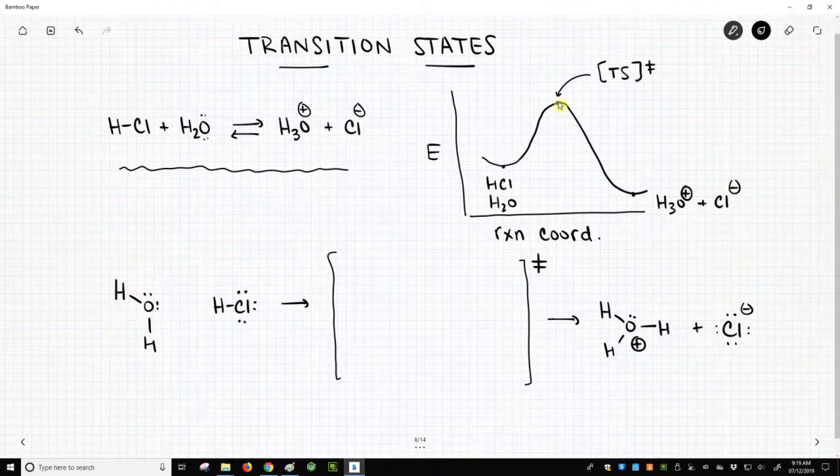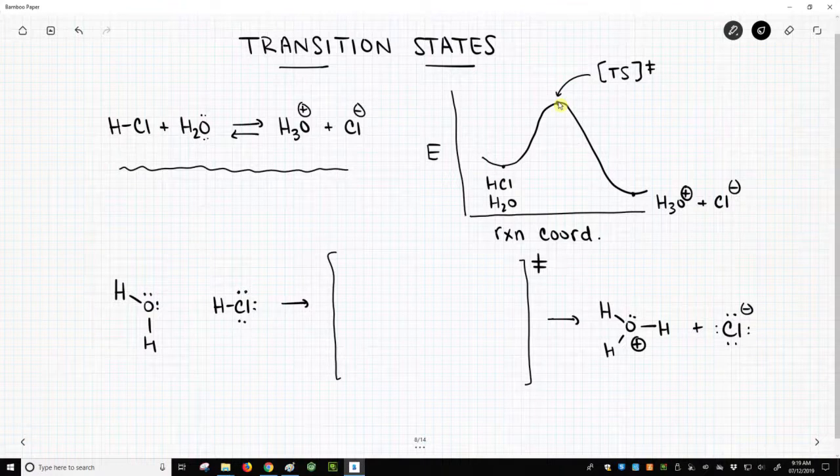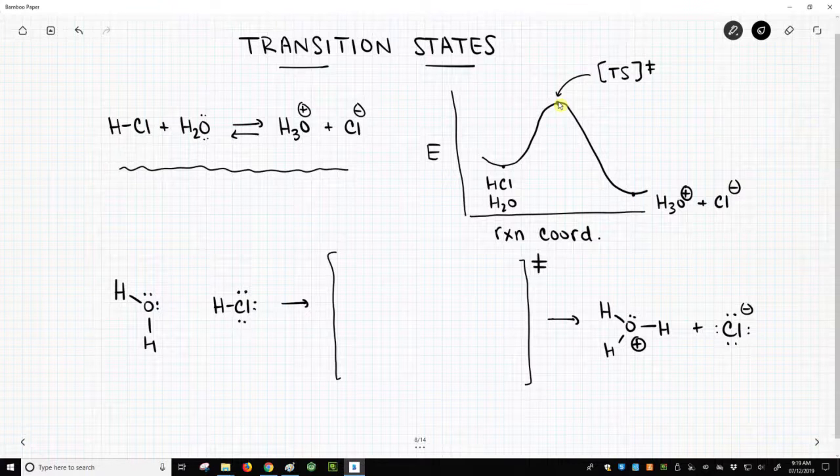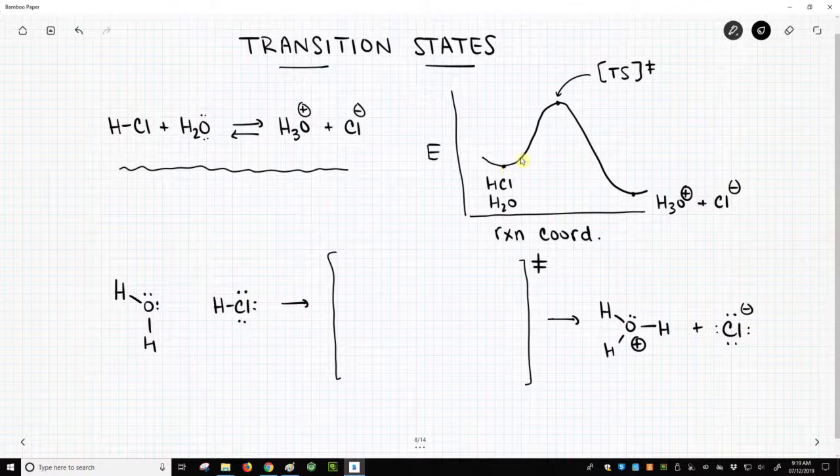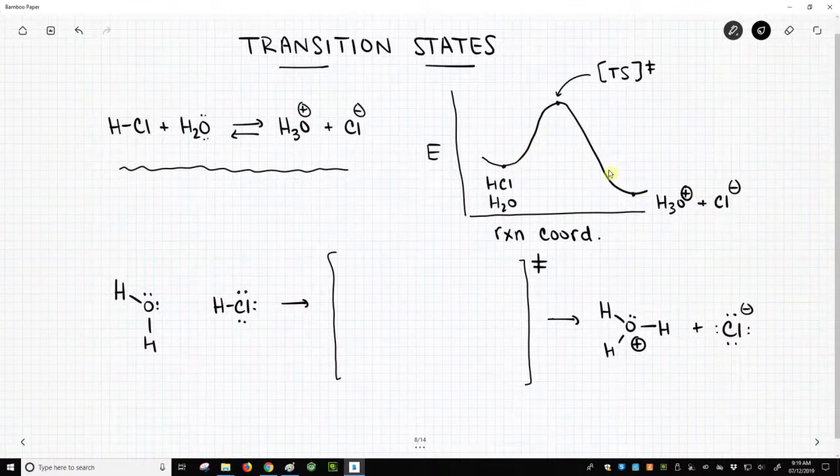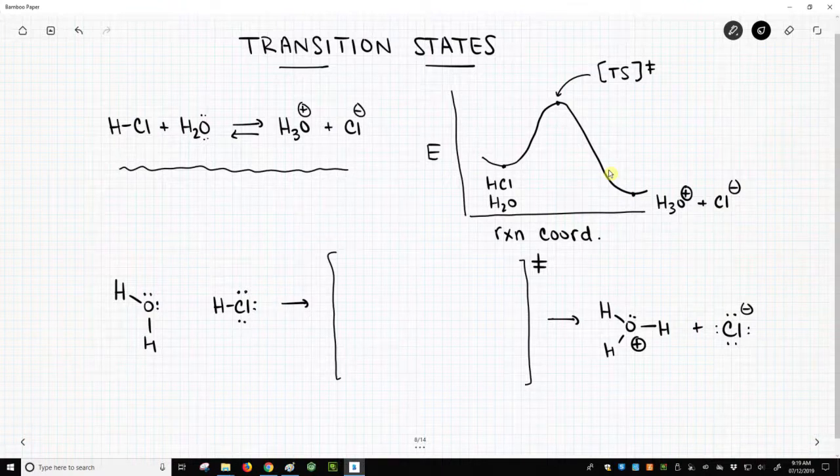But what is going on in our transition state? The transition state is a peak in energy, not a dip in energy. And anything that's not a dip in energy is technically a hypothetical state because it doesn't have a measurable lifetime. You can't directly observe it. But if we went from our starting materials to our products, we know we must have at some point gone through the transition state.